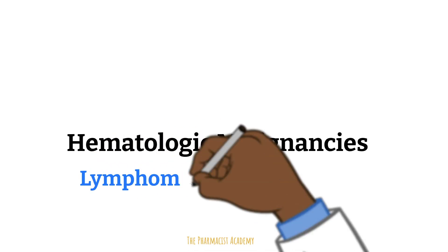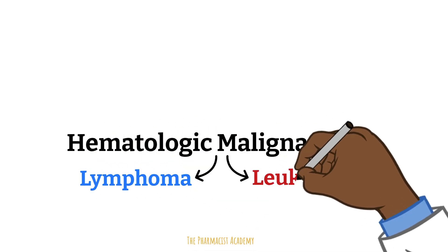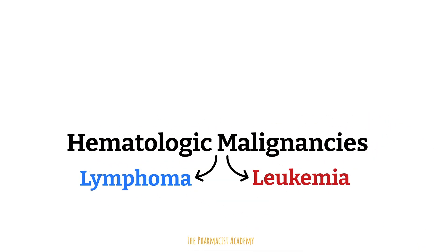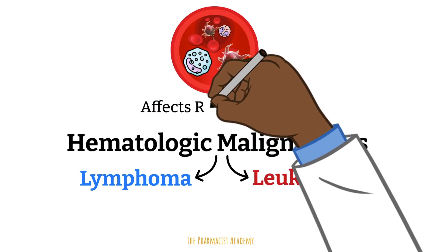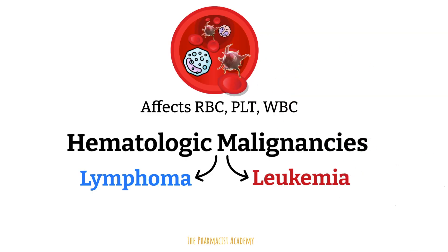Lymphoma and leukemia are both types of hematologic malignancies, also known as blood cancers. Cancer in general affects specific cells in the body — lung cancer occurs in cells of the lung, breast cancer affects cells of the breast. Hematologic malignancies or blood cancers are related to cells usually found in the blood: the white blood cells, red blood cells, and platelets.